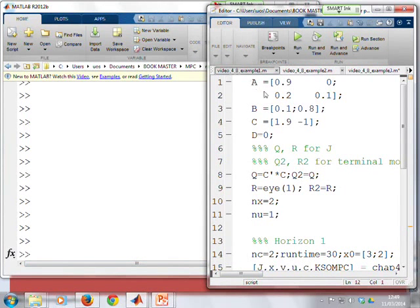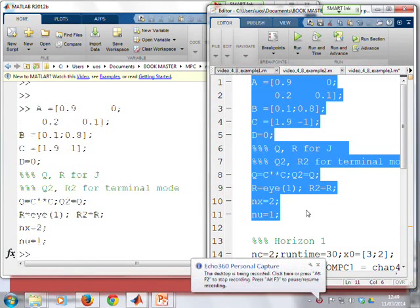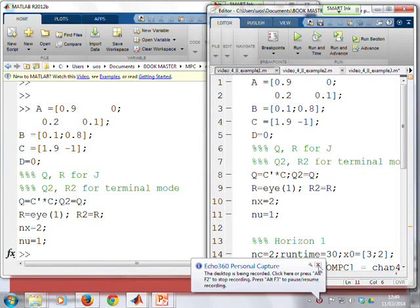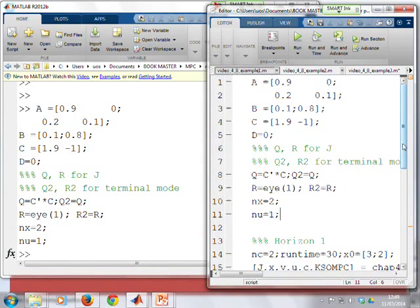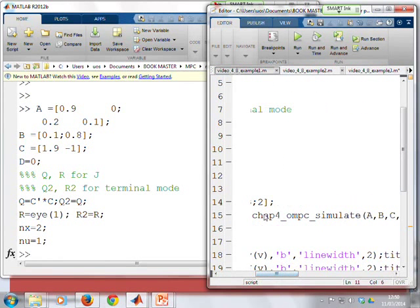Here we have example 1, and you'll notice the first thing we do is enter our system as normal. What the code does next is, first of all, we've got a file here called chapter 4, OMPC, underscore simulate. That will simulate this OMPC law for the regulation case.